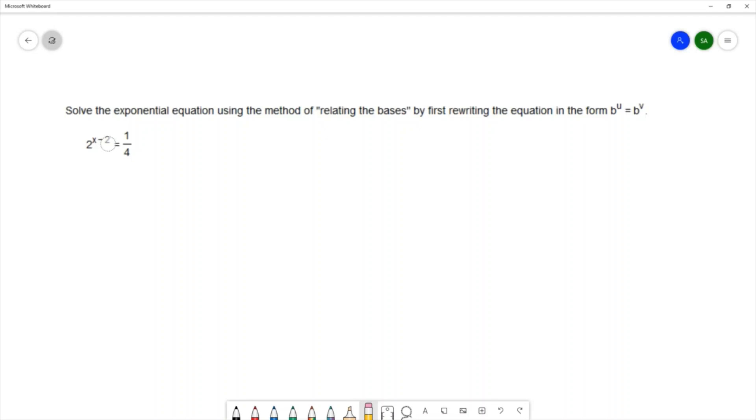The equation that we have for this example is 2 to the x minus 2 equals 1 fourth. On the left I have a base of 2 and on the right I have a base of 4 or can be written as 2 squared, so that's the base that I'm going to use to solve this, base of 2.